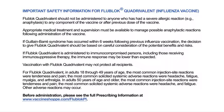Appropriate medical treatment and supervision must be available to manage possible anaphylactic reactions following administration of the vaccine. If Guillain-Barré syndrome has occurred within six weeks following previous influenza vaccination, the decision to give FluBlock Quadrivalent should be based on careful consideration of the potential benefits and risks. If FluBlock Quadrivalent is administered to immunocompromised persons, including those receiving immunosuppressive therapy, the immune response may be lower than expected.